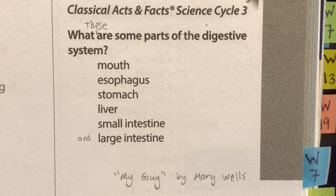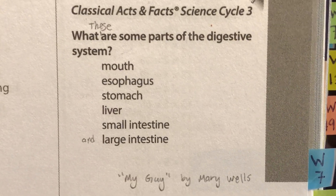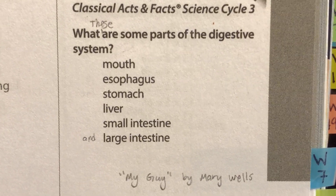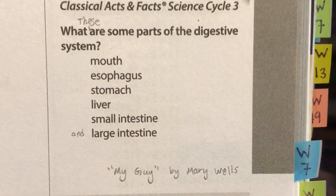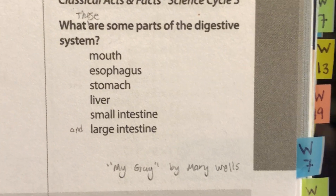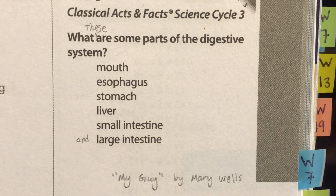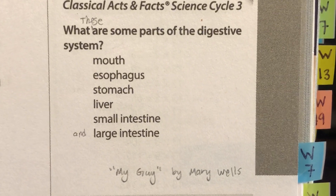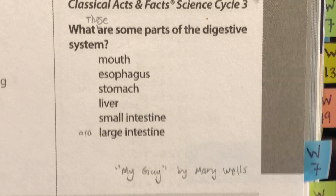What are some parts of the digestive system? These are some parts of the digestive system. Mouth, esophagus, stomach, liver, small intestine, and large intestine. These are some parts of the digestive system.